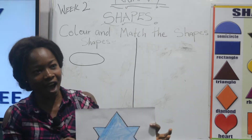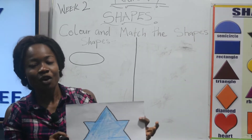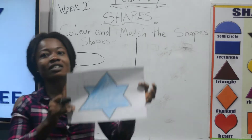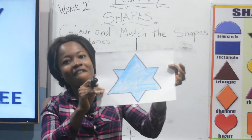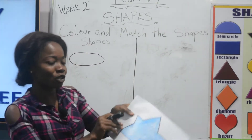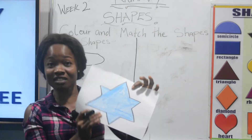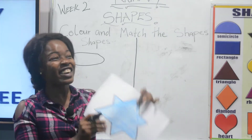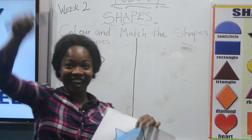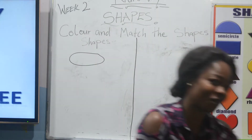Now let's move on to the next shape. What shape is this? Star! Repeat after me: star. Very good. We are going to draw a star. Where can you find a star? In the sky! Very good, you have done well.